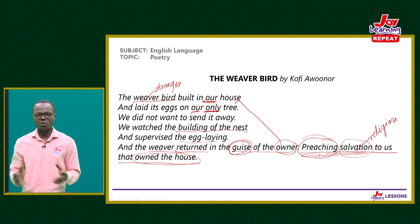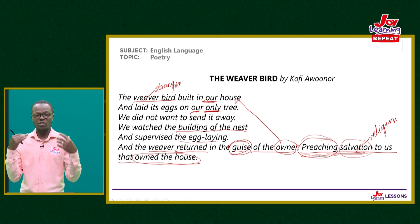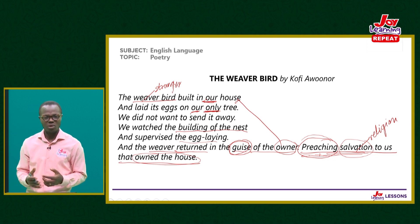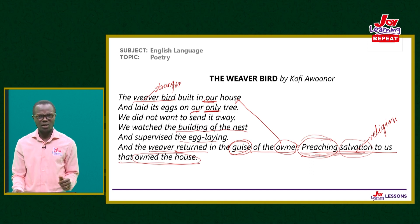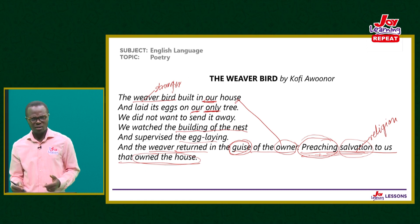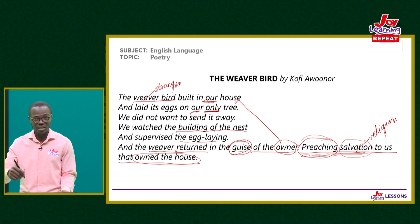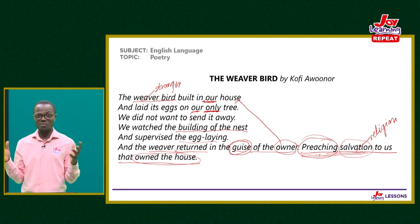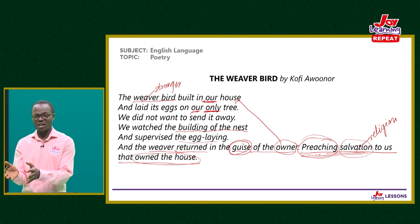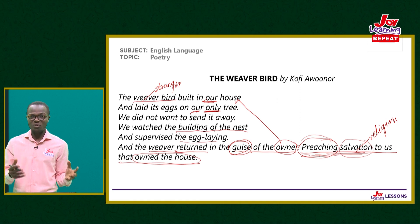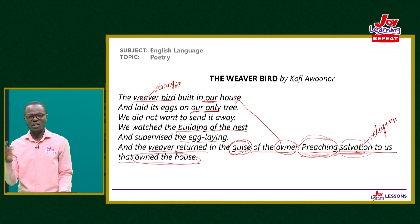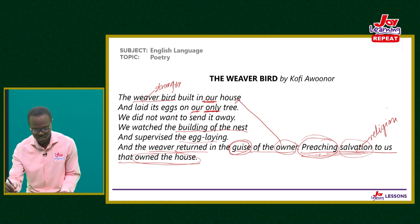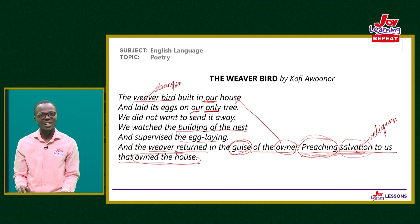Now let's answer questions on The Weaver Bird. The weaver bird is a post-colonial poem — a poem written to reflect who we have become after colonialism and how we are living our lives. It speaks to us to mend our ways and not look on without doing anything, otherwise we will be overtaken by events. The poem is about colonialism — specifically the negative effects that colonialism has had on Africans.